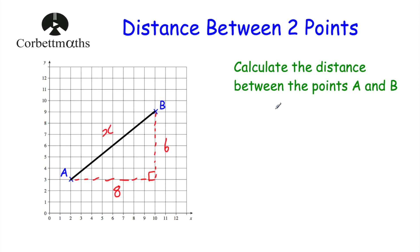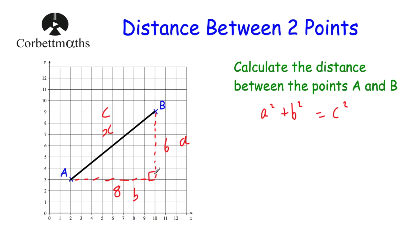So let's write down Pythagoras's theorem: a² + b² = c². Let's label the sides of our right angle triangle — a and b are the two shorter sides, and c is the longest side, or the hypotenuse. The longer side is the one opposite the right angle, so this side is going to be our c. That means a and b are these two sides — it doesn't matter which way around you label them. C has to be that hypotenuse, and that's our X.